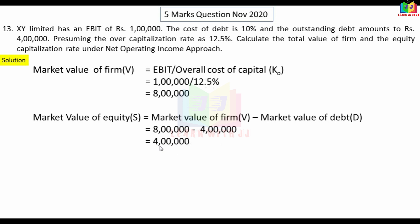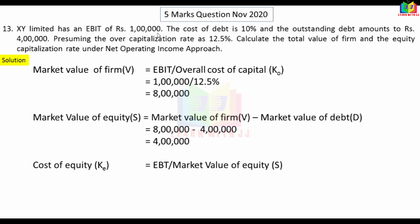Now we calculate the equity capitalization rate. The formula is EBT divided by market value of equity. EBIT is 1 lakh and interest is 10% on 4 lakh, which equals 40,000. So EBT equals 1 lakh minus 40,000 equals 60,000. Then 60,000 divided by 4 lakh gives us the cost of equity.